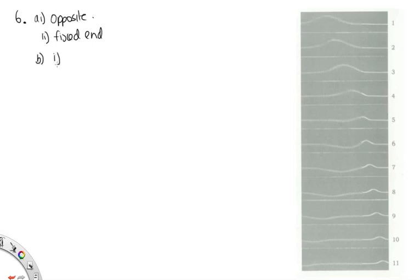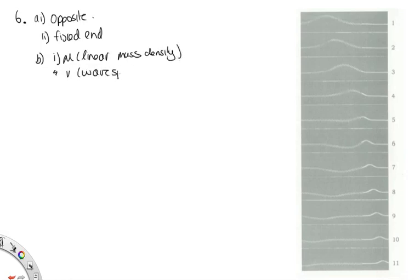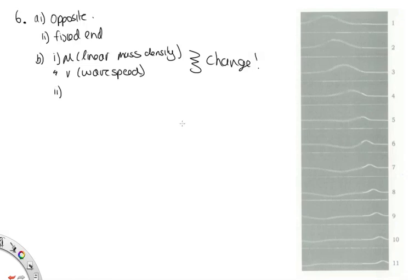Part B: which quantities are different on the two sides of the boundary? Tension cannot change along the length of the spring, so that's the same on each side. Linear mass density μ does change, and the wave speed also changes. So both μ, the linear mass density, and v, the wave speed, are different on each side. The easiest quantity to use to predict whether the boundary acts like a fixed or free end is the linear mass density.